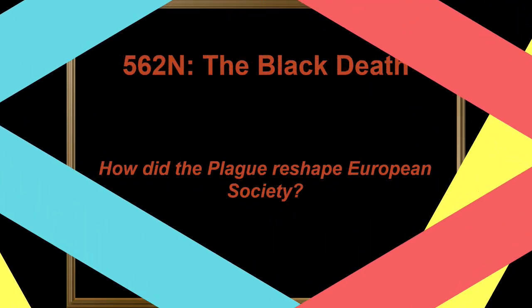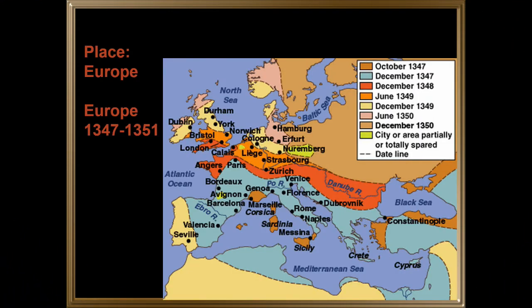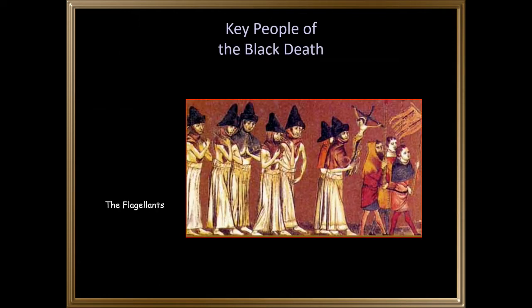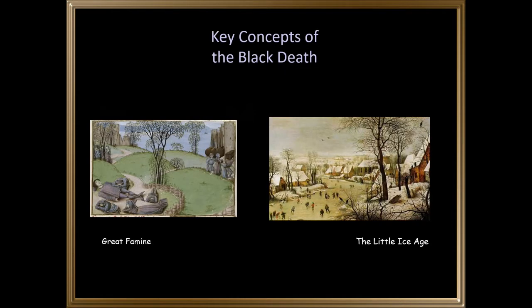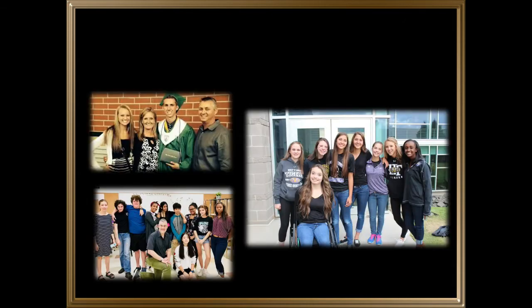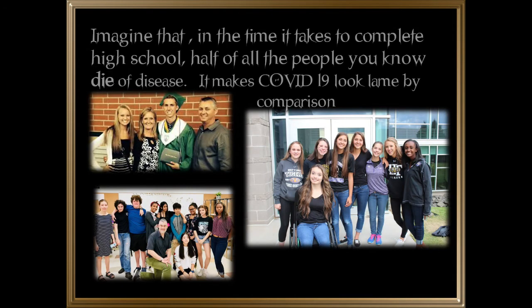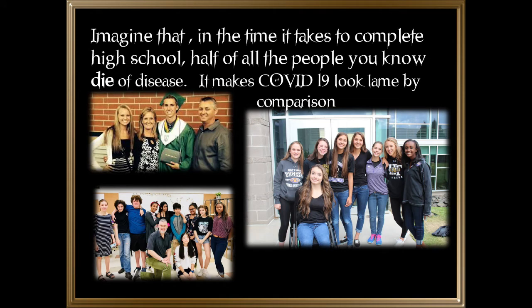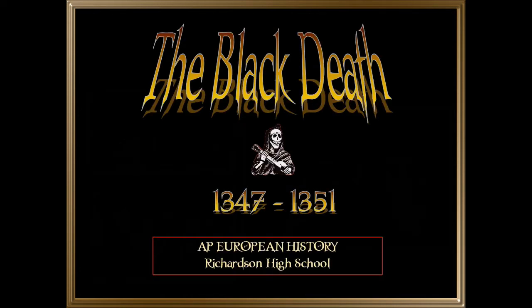This is Lesson 562: the Black Death. How did the plague reshape European society? The place is Europe, and the time is between 1347 and 1351. Key people of the Black Death: the flagellants. Key concepts: the Great Famine and the Little Ice Age. Imagine that in the time it takes to complete high school, half of all the people you know die of disease — it makes COVID-19 look lame by comparison.